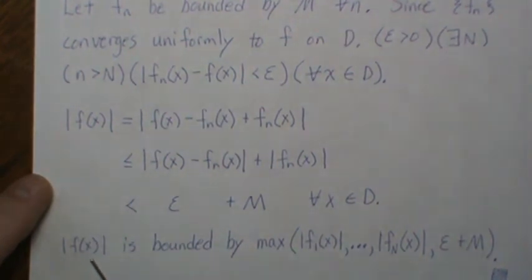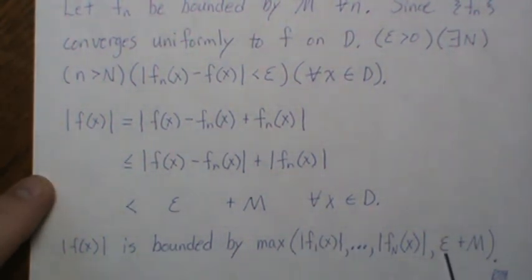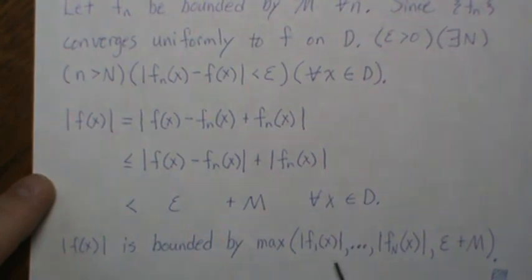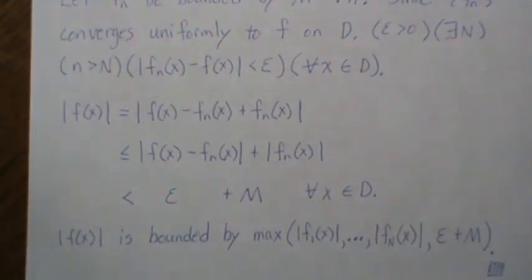The absolute value of f(x) is bounded by the maximum of the first capital N points, |f(1)|,...,|f(N)(x)|, and epsilon plus M. So the maximum of this bounds the function f(x).